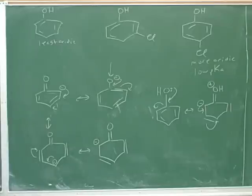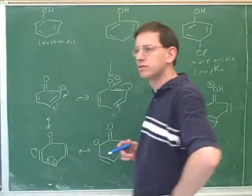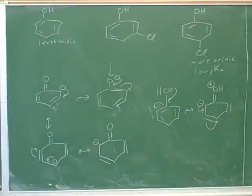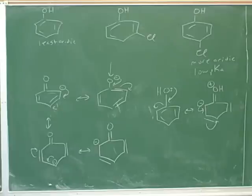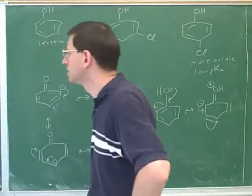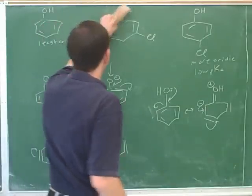One thing that was an issue on the quiz again was ranking acids and bases. There's a lot on that in the notes and it isn't really in the textbook much. Here's an example from the quiz: a carboxylic acid connected to a benzene ring, a hydroxy connected to a benzene, another hydroxy connected to a benzene, and a methyl connected to the benzene. It was obvious that the methyl group is the least acidic.